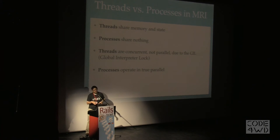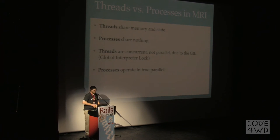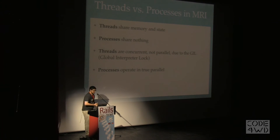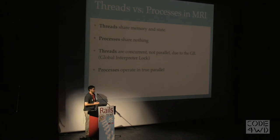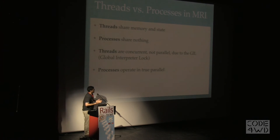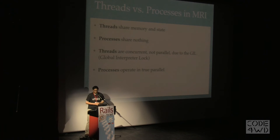Now let's speak about the specific case of threads and processes in MRI, the default implementation of Ruby. Processes operate the way you probably expect — you fork a process and they're moving in parallel. But threads are concurrent but not parallel because of the Global Interpreter Lock, the GIL, which means if one thread is moving, the other is stopped. When that thread stops, the other one can start. They go back and forth, sharing time effectively, but never shall both work at the same time.